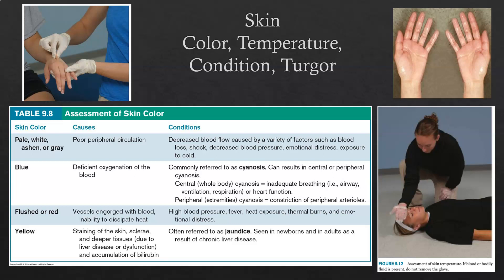The next vital sign is condition of the skin: color, temperature, overall condition, and turgor. Skin color is highly affected by circulation. Pale or white skin indicates poor circulation; blue indicates deficient oxygenation of the blood; red or flushed means the skin is engorged with blood and unable to dissipate heat; and yellow indicates some form of jaundice.